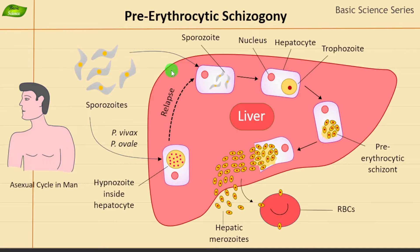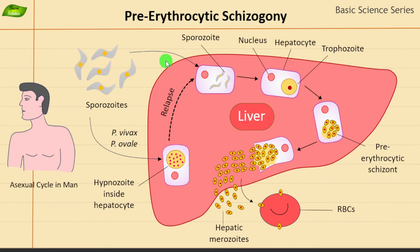A few points before we start: Plasmodium has different forms. For example, there are sporozoites, trophozoites, and merozoites. These are some of the important forms when it comes to the life cycle of Plasmodium vivax, ovale, or other species.